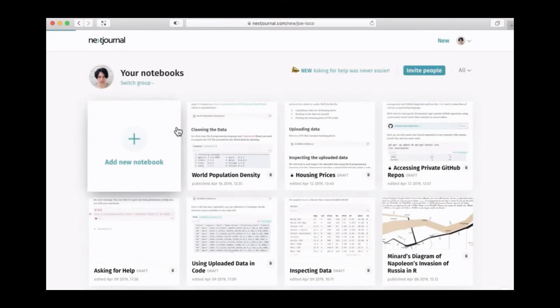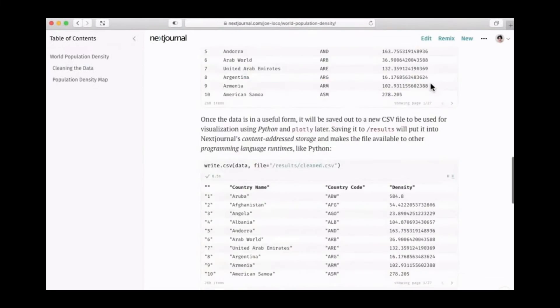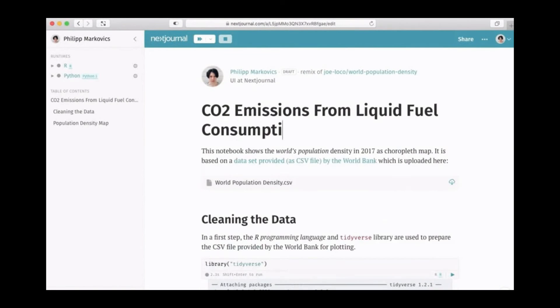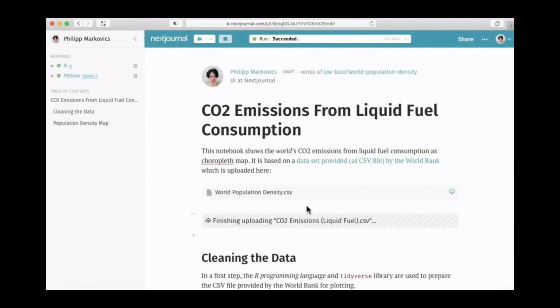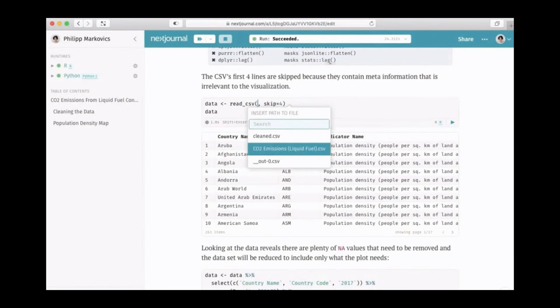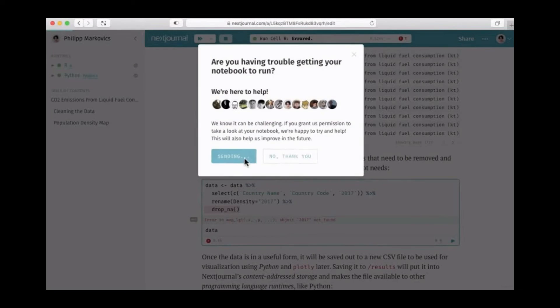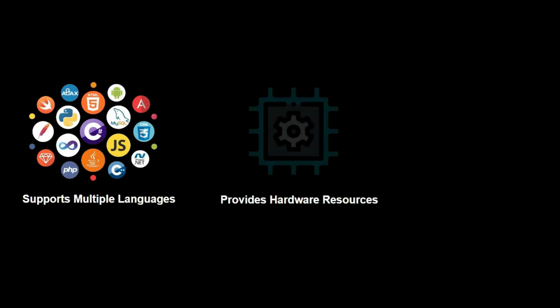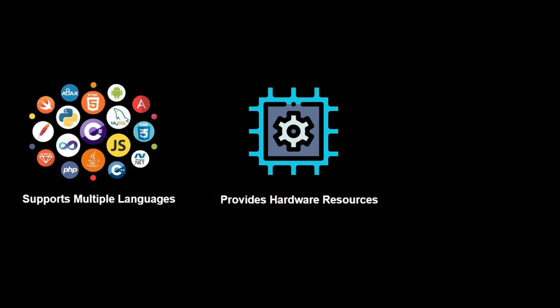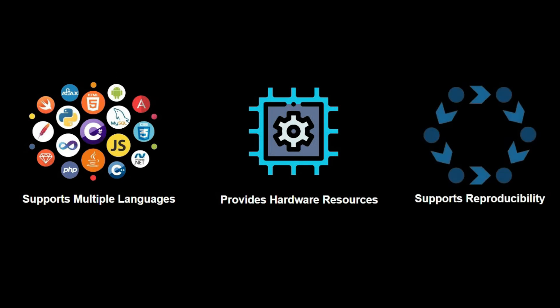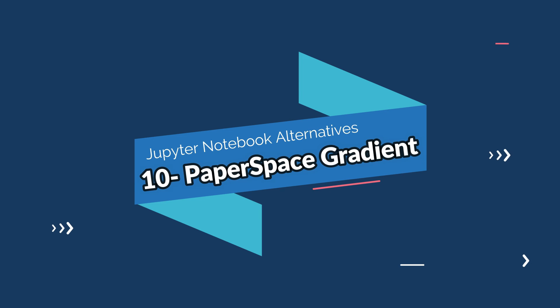On number nine, we have Nextjournal, which is a cloud-based platform for scientific computing and data science that offers many of the same features as Jupyter Notebook as well as additional capabilities. Some cool features of Nextjournal are support for Python, R, and Julia, powerful hardware resources including GPUs, and its main advantage is a focus on reproducibility, which allows users to easily share and reproduce their work.